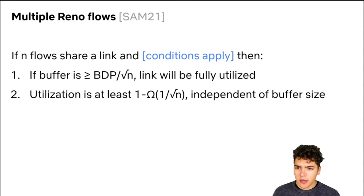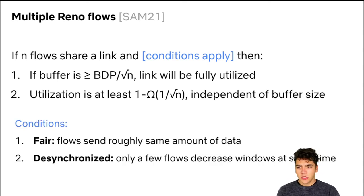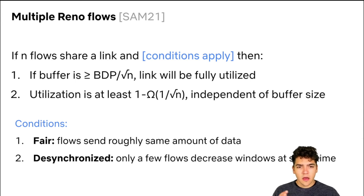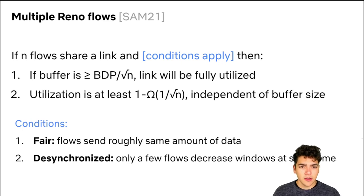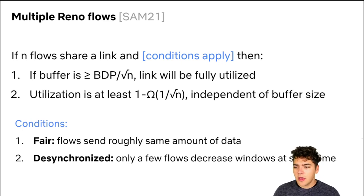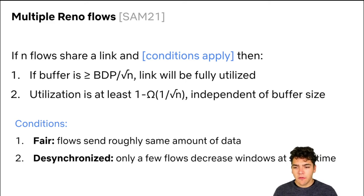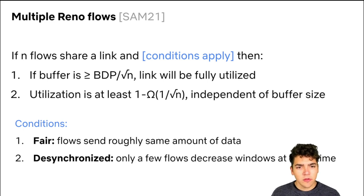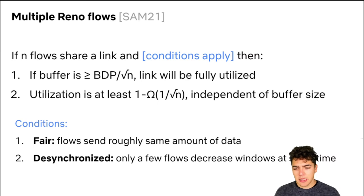Our theorem has two conditions. The first is that flows are fair in the sense that they all send roughly the same amount of data into the link — which we believe is reasonable since this is what TCP wants to enforce. The second condition is that flows are desynchronized, meaning only a few flows decrease their windows at any one time. We'll come back to these conditions shortly.